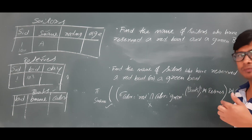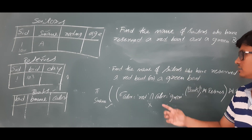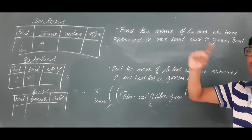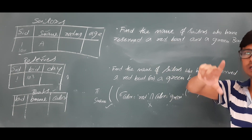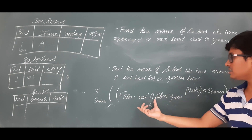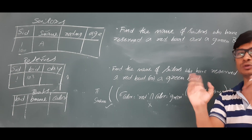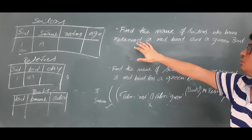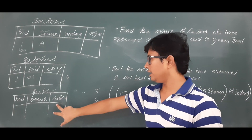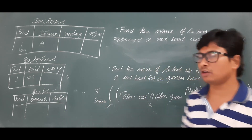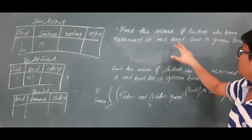Why is intersection wrong here? Using intersection would identify boats whose color is both red AND green — that is, a single boat with two colors. But the question says who have reserved a red boat and a green boat, meaning two separate boats: one red-colored boat and one green-colored boat.